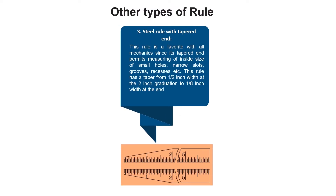The steel rule with a tapered end is a favorite with all mechanics, since its tapered end permits measuring of inside sizes of small holes, narrow slots, grooves, recesses, etc. This rule has a taper from half-inch width at the two-inch graduation to one-eighth inch width at the end.